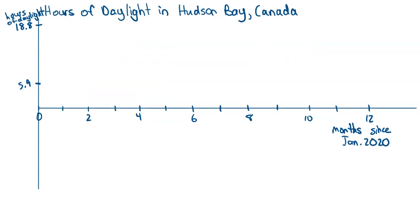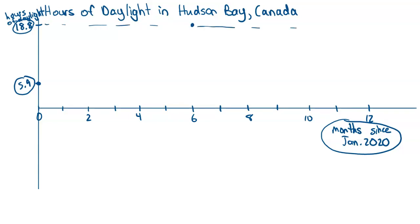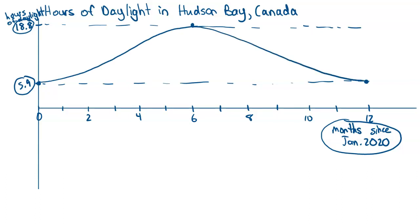This graph shows the number of hours of daylight in Hudson's Bay, Canada — the further north in the Northern Hemisphere, the longer the summer days and the shorter the winter days. The x axis shows months since January 2020, with daylight ranging from 5.9 up to 18.8 hours. Starting near January 1st at the lowest point, six months later at the summer solstice we reach 18.8, and after 12 months we're back to the shortest day, giving a curve that repeats every year.